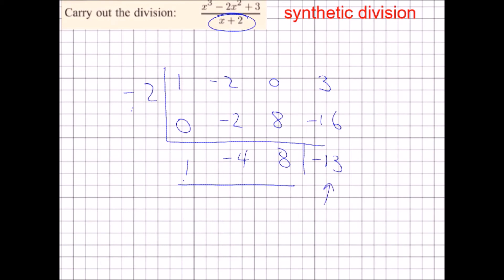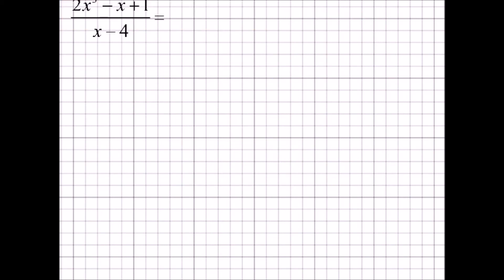All right, next one. This one here I can divide synthetically. Once again, I'm dividing by a linear factor where the coefficient of x is 1. So now I put the zero, which is 4, in front of my little L shape here, and I've got the 2, 0 for the x squared, minus 1 for the x, 1 for the constant.